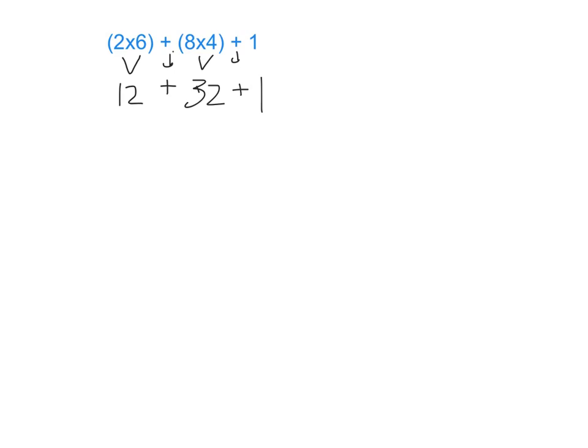There is multiplication and division in the same step; we don't do one before the other, we work left to right. Since there's no remaining multiplication and division, I go to addition and subtraction, working left to right. 12 plus 32 gives me 44, plus 1, which gives me 45.